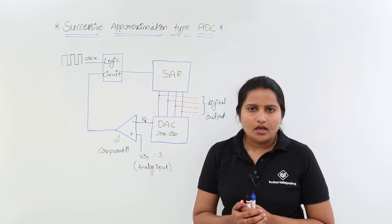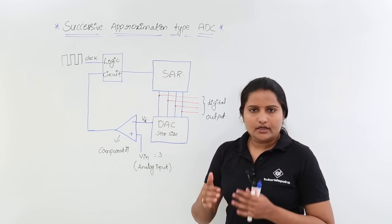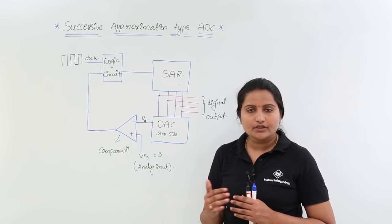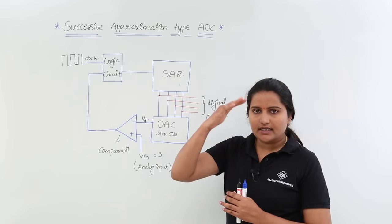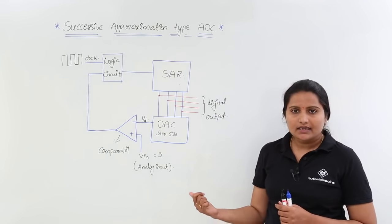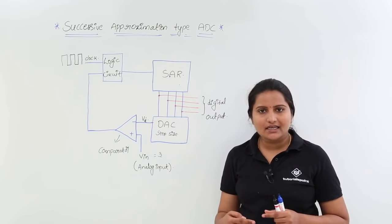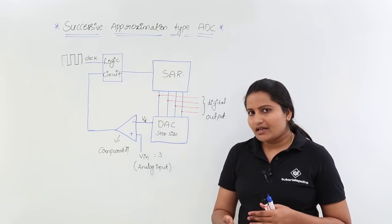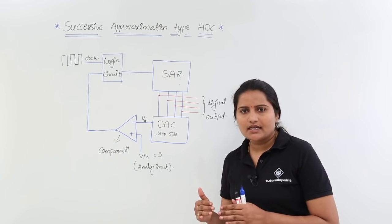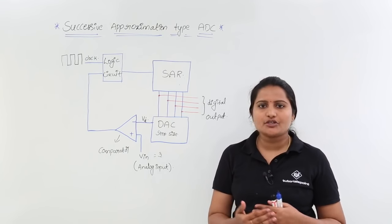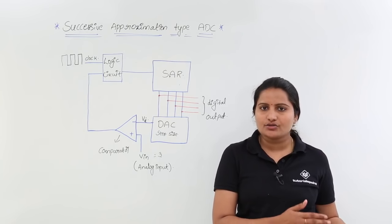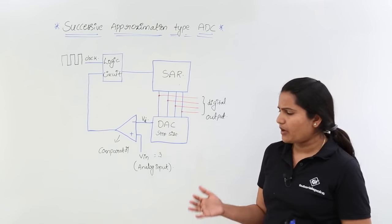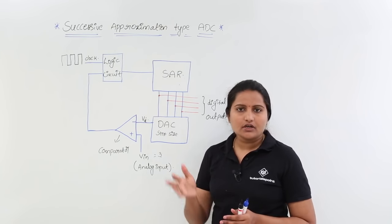Here that problem is going to be reduced. We are considering the problem in counter type ADC and reducing that number of cycles to n clock cycles. Actually in counter type we use 2 power n minus 1 clock cycles, whereas here that number is reduced to n cycles. In n cycles we can convert our given analog input to digital output. We want to reduce cycles just to speed up the conversion process — if number of cycles decrease, obviously we reduce the time taken for conversion, that means speed of operation.